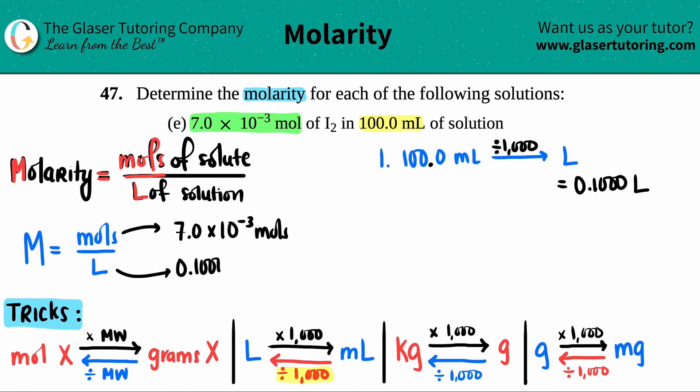So now I'm ready to solve molarity. Capital M equals 7.0 times 10 to the negative 3 divided by 0.1000 liters. Capital M equals, let's see, 7.0 times 10 to the negative 3, all divided by 0.1000.